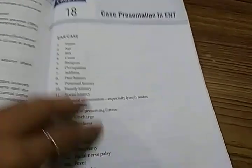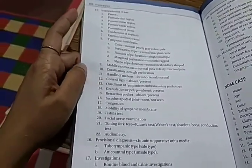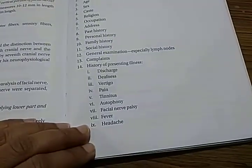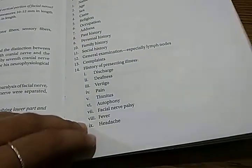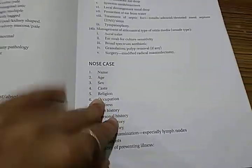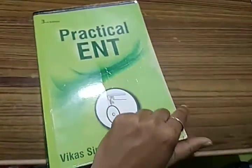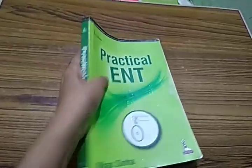Case presentation in ENT. So when you are taking history, you can keep this book in your hand and based on this list you can take the history. You can ask the person about deafness, vertigo, pain, autophony - all this you can ask. Nose case, throat case - so many things. So we are done with this book - Practical ENT by Vikas Sinha - a handy book. That's all for now, bye-bye.